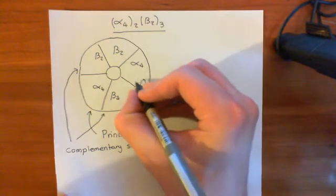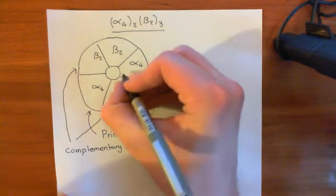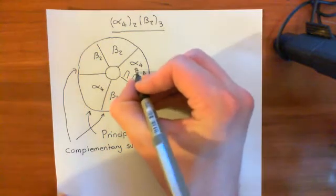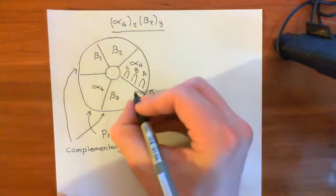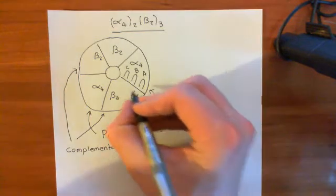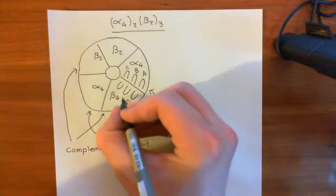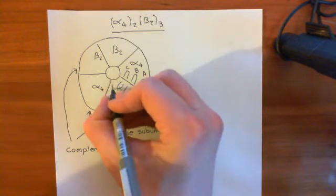So this alpha-4 subunit, it will have the A, B, and C loops here. So here's the A, the B, and the C loop. Then this beta-2 subunit here, this will then have the D, E, and F loops. So here's D, here's E, this is F.